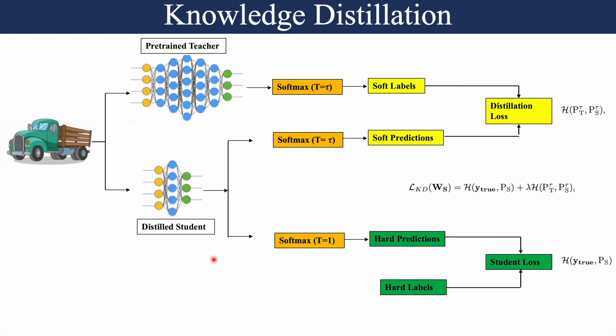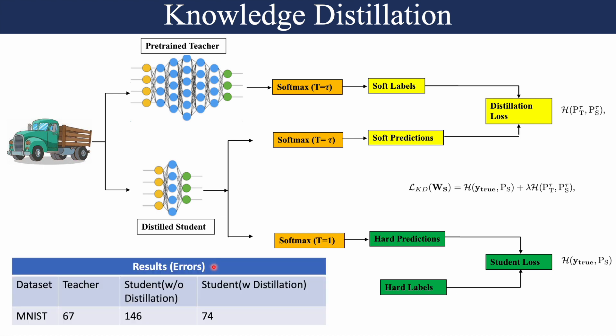Hinton carried out experiments on the MNIST dataset. The teacher network had two hidden layers with 1200 rectified linear units and gave 67 absolute errors. The student network with two hidden layers and 800 rectified linear units gave 146 absolute errors without knowledge distillation, but only 74 absolute errors with knowledge distillation — validating that the method works.